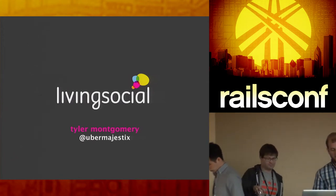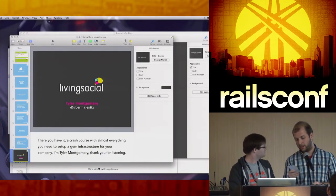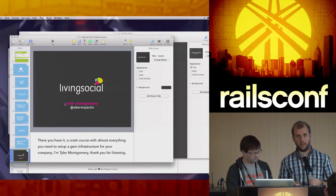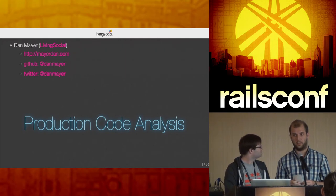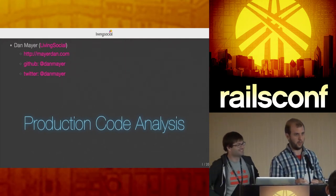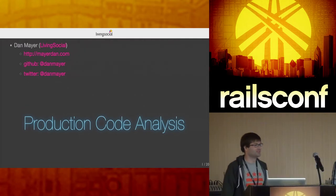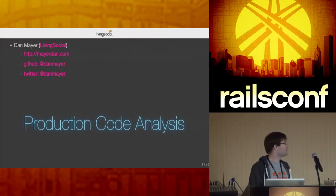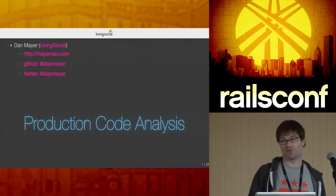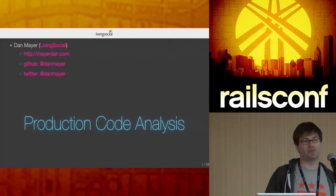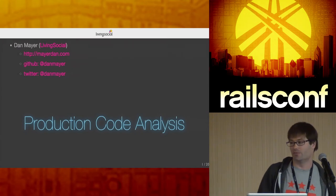Next up is Dan Mayer, also on our consumer app team. He does a lot of teaching Ruby in the DC area, and I just learned he can fix bugs from ski lifts over the phone — a useful parlor trick. Dan's talking about production code analysis: as you build up services and split code, it gets much harder to debug and understand your code. A small application is easy to reason about, but as systems grow it gets more difficult.